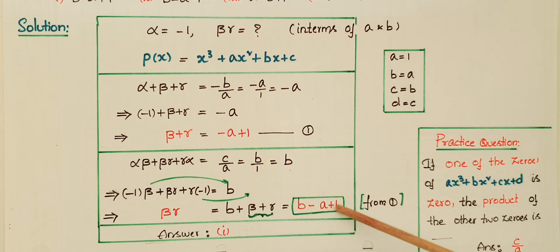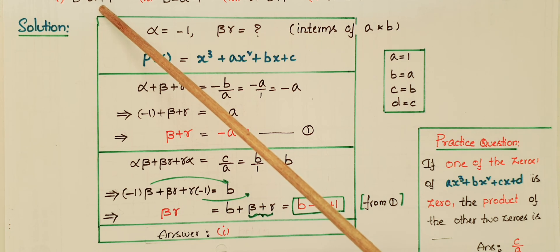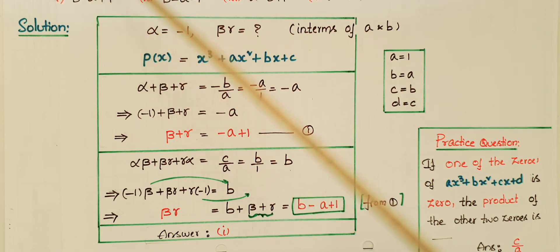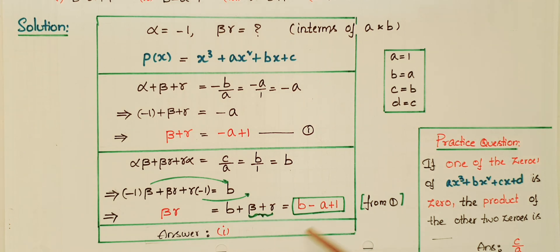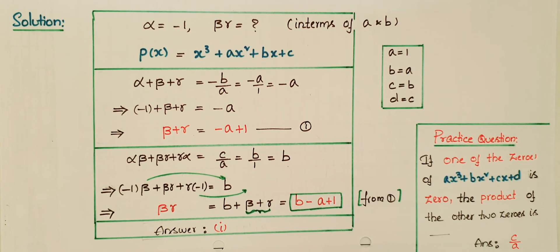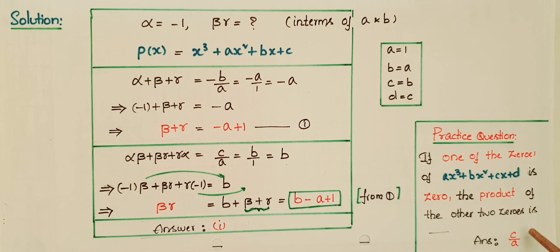Therefore, βγ = b − a + 1. So the answer is the first option: b − a + 1. Also note that the product of all three zeros is given by −d/a, which equals c/a for this polynomial.